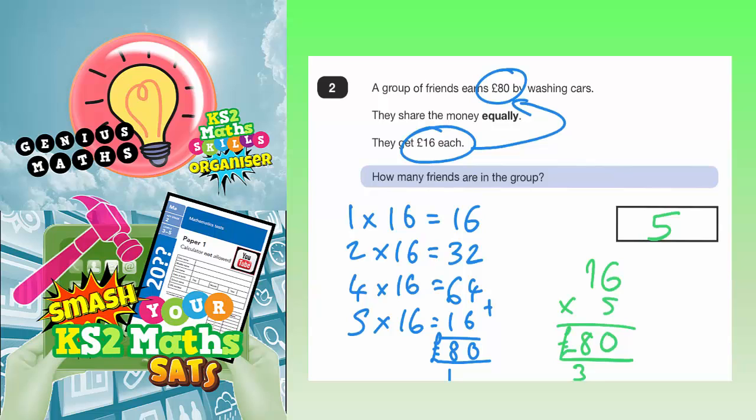5 friends. There must be 5 friends, because when they get £16 each, that makes a total of £80. Final answer is 5.